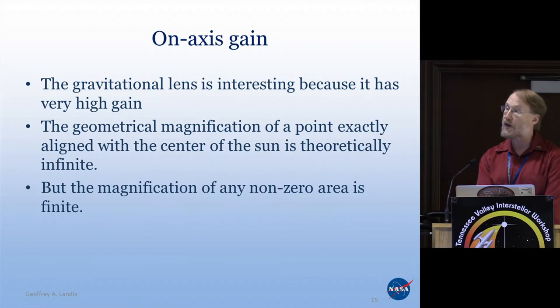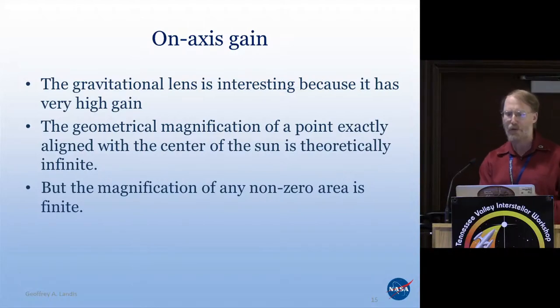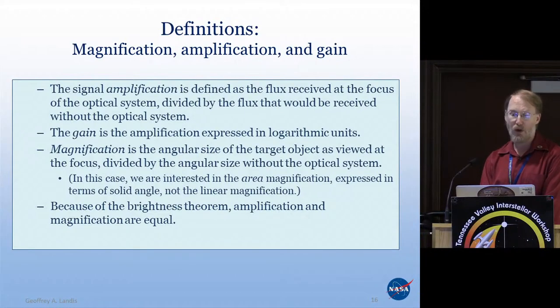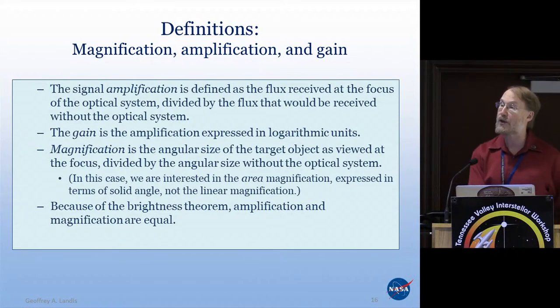Let's look at the geometrical magnification. A lot of the old papers on gravitational lenses said the focal blur due to geometrical optics is theoretically infinite. Actually, it isn't infinite — it's infinite only for an infinitesimal point. But nothing is an infinitesimal point. Amplification is defined as flux at the focus divided by the flux that would have been received without the lens. Gain is the same as amplification, usually expressed in logarithmic units.